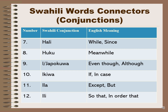Number seven: 'hali' means 'while' or 'since'. Number eight: 'huku' means 'meanwhile'. Number nine: 'ijapokuwa' or 'japokuwa' meaning 'even though' or 'although'. Number ten: 'ikiwa' in Swahili can be translated as 'if' or 'in case' in English. Number eleven: 'ila' which means 'except' or 'but'. Number twelve: the conjunction 'ili' means 'so that' or 'in order that'.